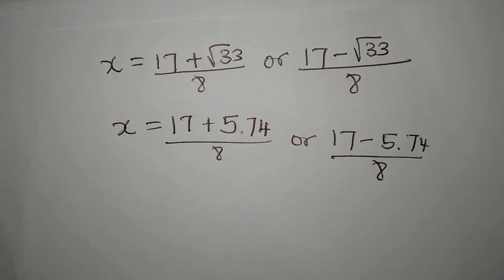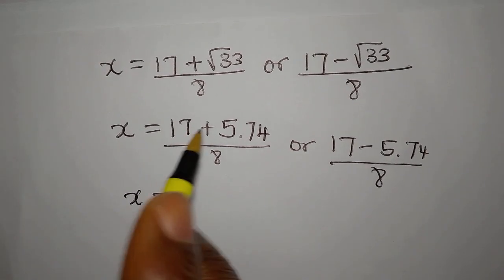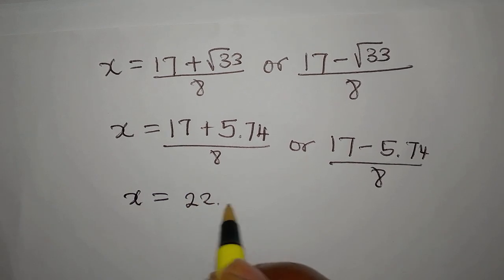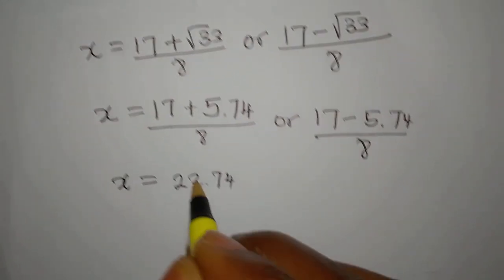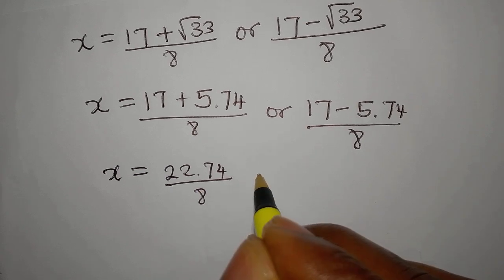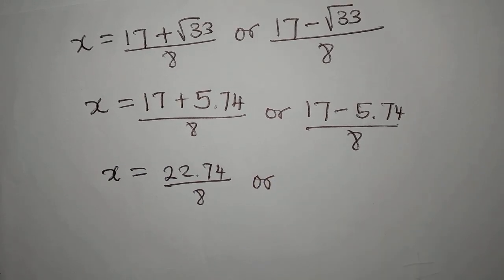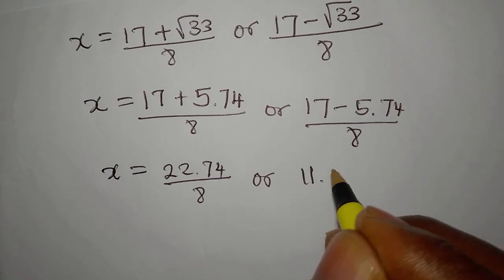So x will be the addition of this, 22.74 divided by 8, or 11.26 divided by 8.